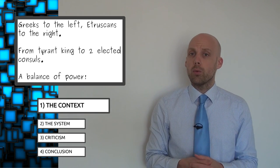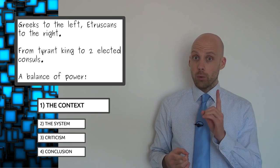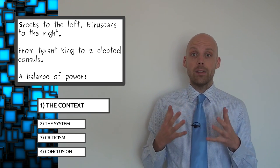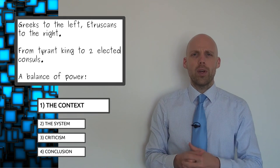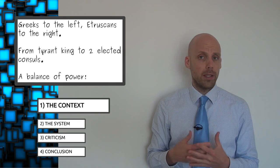But what we do know is that the Romans replaced their last king with a duo-consulship. They replaced one tyrant with two elected leaders. They were determined to find a balance of power that would prevent any one single individual from dominating absolutely.